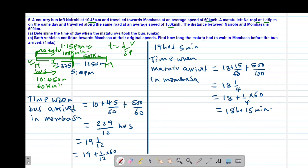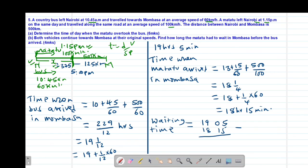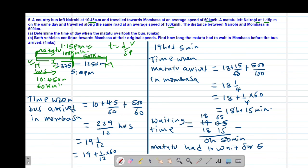The question asks how long the matatu had to wait in Mombasa before the bus arrived. The waiting time equals the bus arrival time minus the matatu arrival time: 19:05 minus 18:15. Borrowing one hour, 60 plus 5 equals 65; 65 minus 15 equals 50 minutes. So the matatu had to wait 50 minutes before the bus arrived in Mombasa.